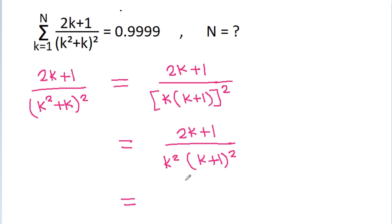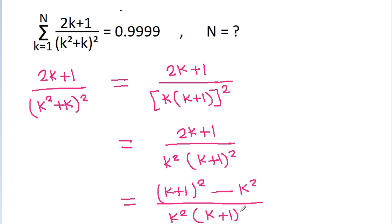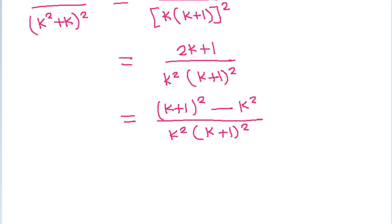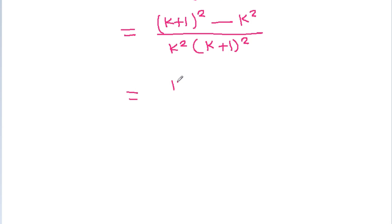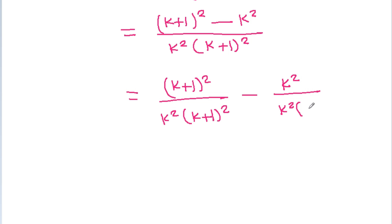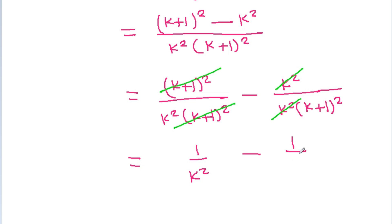So, 2k+1 equals (k+1)² − k². Therefore, (2k+1) divided by k²(k+1)² equals [(k+1)² − k²] divided by k²(k+1)². Here (k+1)² will get cancelled and k² will get cancelled, and we get 1/k² minus 1/(k+1)².